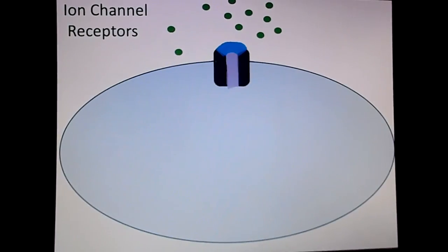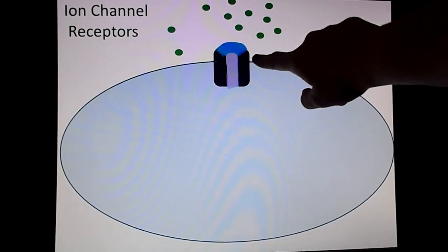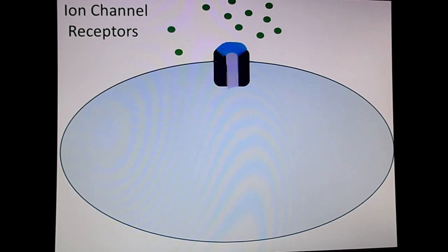In this example, in the closed gate formation, the little blue part here represents the part that can change. Right now it's like a gate that's closed, and this is going to block ions from flowing through the protein into the cell.